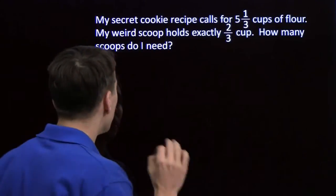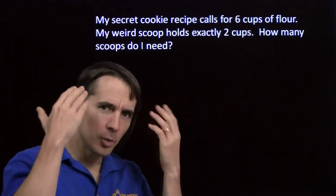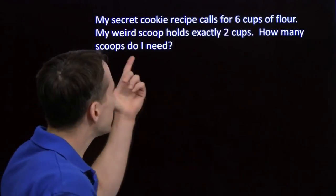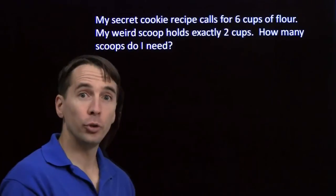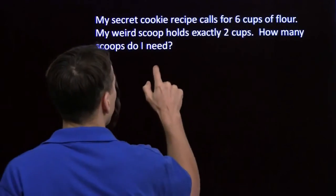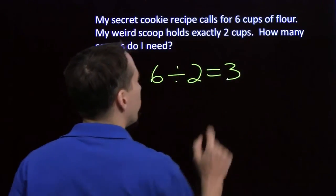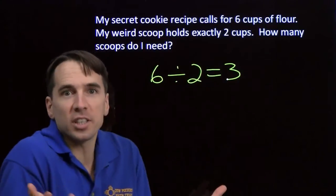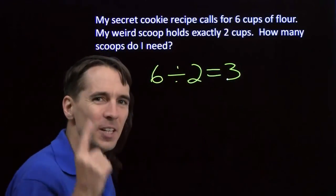One way I deal with that is I turn the problem into something that doesn't have any fractions. It helps me think about when I should multiply, when I should divide. So if my recipe called for 6 cups of flour and my scoop held 2 cups, oh, then it's clear what I do. Then it's clear it's just division. I need 3 scoops because I need 6 cups total. Each time I scoop, I get 2 cups. That's just 6 divided by 2. I'm going to have to scoop 3 times. This is a division problem.